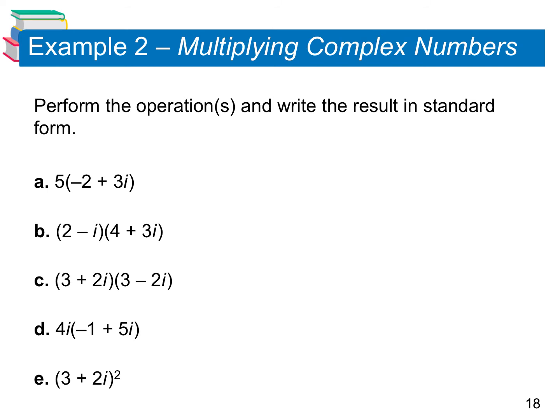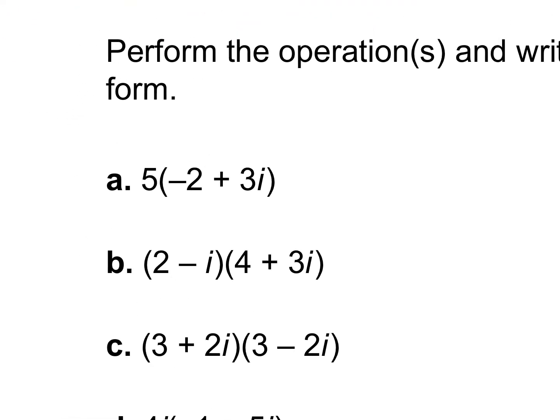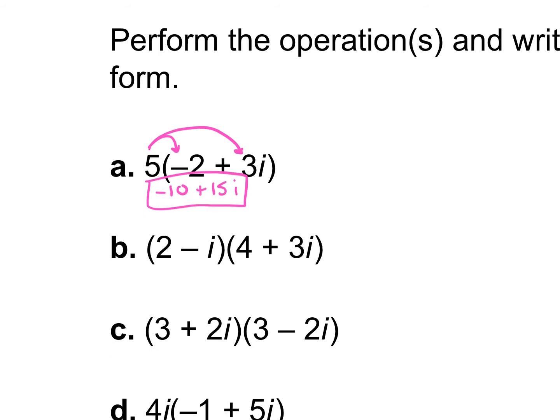In example 2, we are multiplying complex numbers. Here we just distribute: 5 times negative 2 is negative 10, and 5 times 3i is plus 15i. You can multiply just like distributing a number to an expression with a variable — same thing with imaginary numbers. There are no like terms to combine, and it's already in standard form, so that's the answer: negative 10 plus 15i.